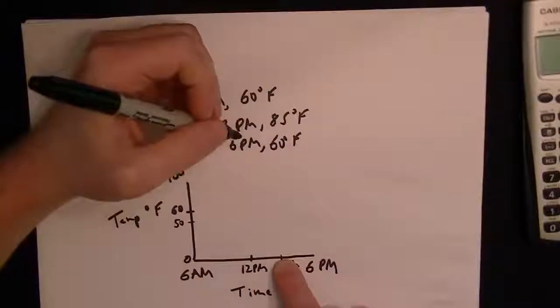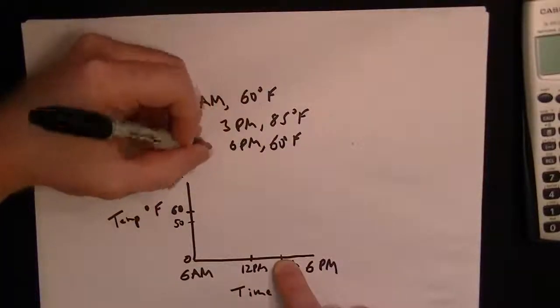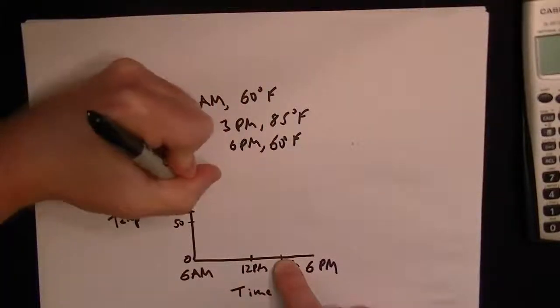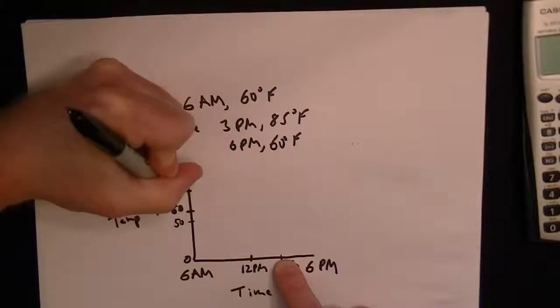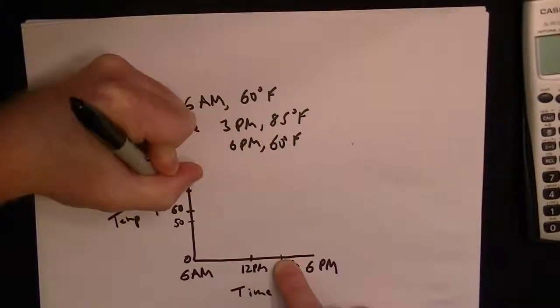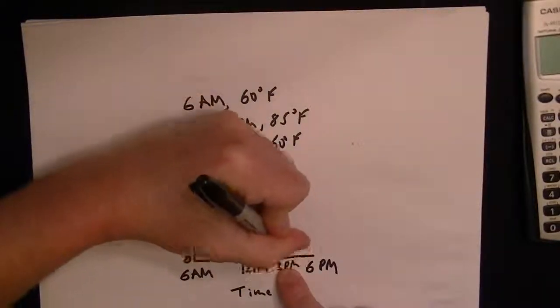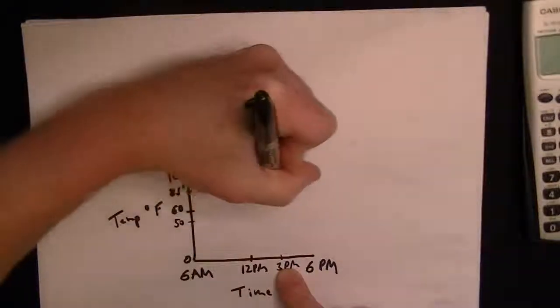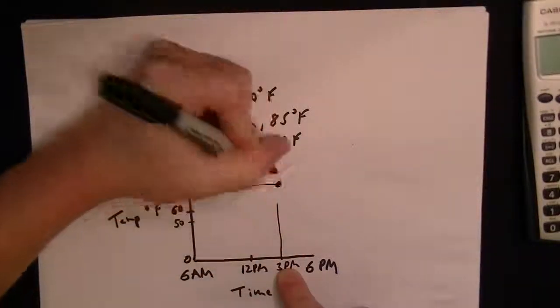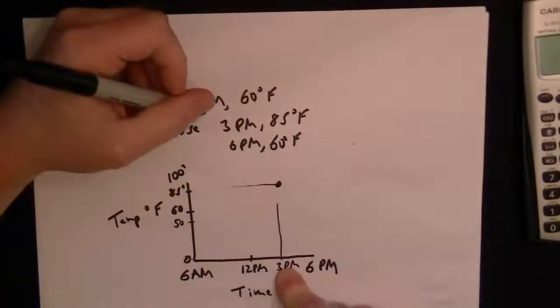So we know our time is going to be about there. Then at 85 it's going to be almost up to 100, so we'll say it's around here - there's 85 degrees. So at 3 PM it's 85, so we just have to figure out where that point would be. So I think it would be about there.